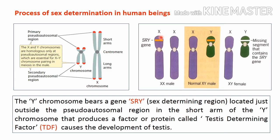Similarly, if the Y chromosome is missing the SRY gene, the XY genotype will develop into a female. The Y chromosome bears the SRY region — the sex determining region — located just outside the pseudo-autosomal region in the short arm of the Y chromosome. This SRY gene produces a protein called testis determining factor (TDF), responsible for development of testes. If the SRY gene is absent, there is no TDF production and a female phenotype develops.